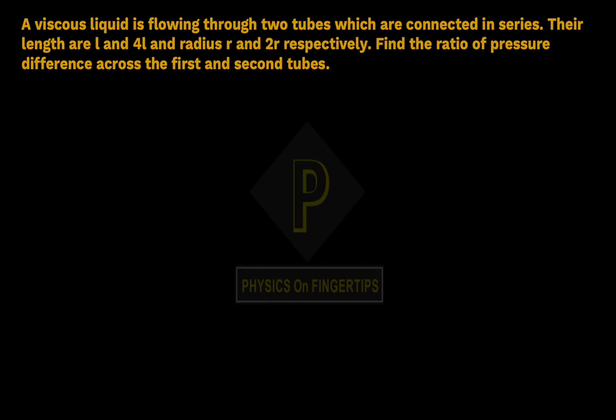Our next question: a viscous liquid is flowing through two tubes which are connected in series. Their lengths are L and 4L, and radius R and 2R respectively.